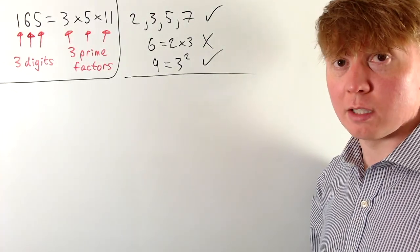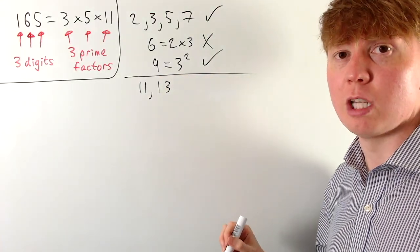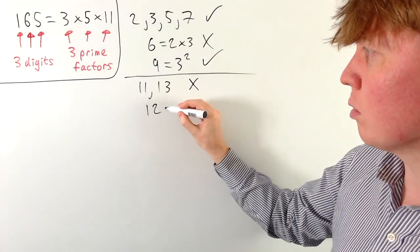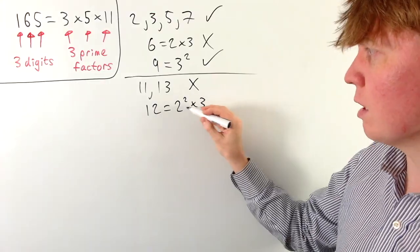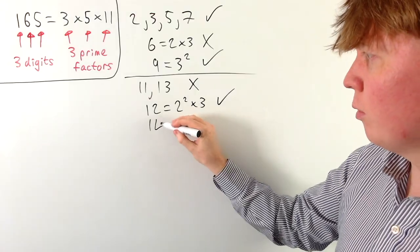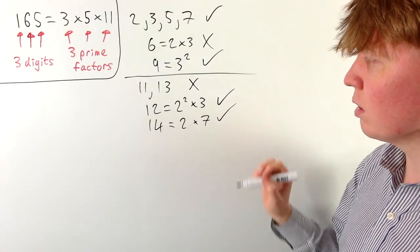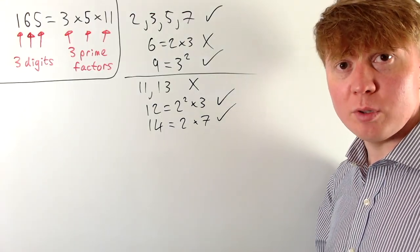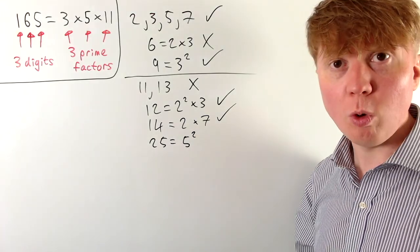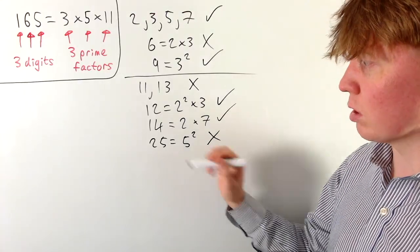For two-digit examples, something like 11 or 13 has only one prime factor each, so these wouldn't work — we need exactly two prime factors. For example, 12, which is 2 squared times 3, has two distinct prime factors, 2 and 3, so this works. 14 would also work: 2 times 7 gives two digits and two distinct prime factors. Something like 25 wouldn't work because it's 5 squared — only one prime factor repeated.